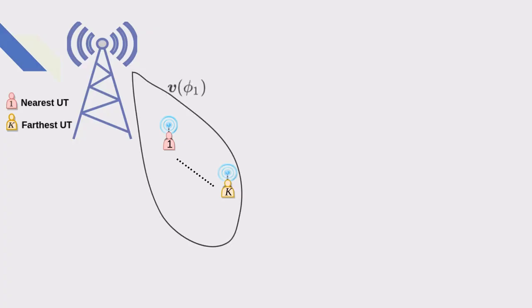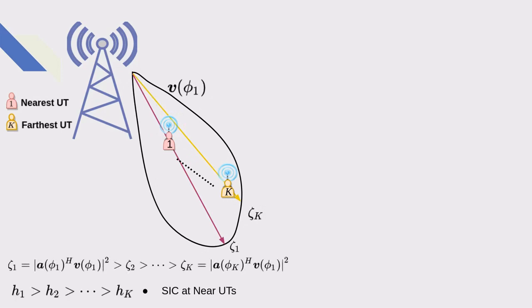In a downlink NOMA system with the beam generated based on the nearest user terminal, the array gains of the near users are higher than the gains of the far users. This makes the effective channel gains of the near users higher than those of the far users, and successive interference cancellation, SIC, can be applied at the near users correctly, following the NOMA scheme.